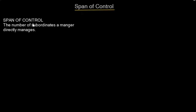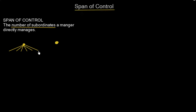So what is the span of control? It's the number of subordinates a manager directly manages. If we draw two managers — Manager A and Manager B — they have a certain number of subordinates. Manager A is going to have six subordinates, and Manager B is going to have just two subordinates.